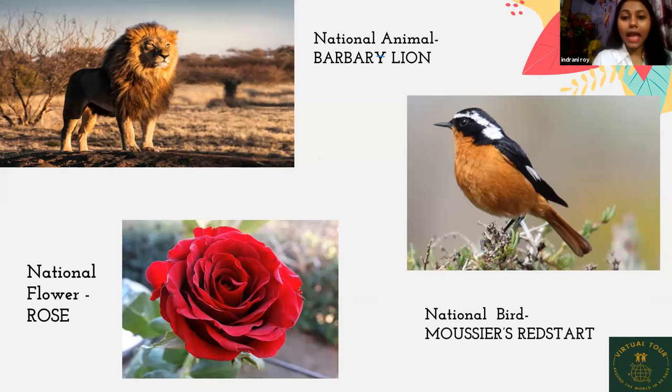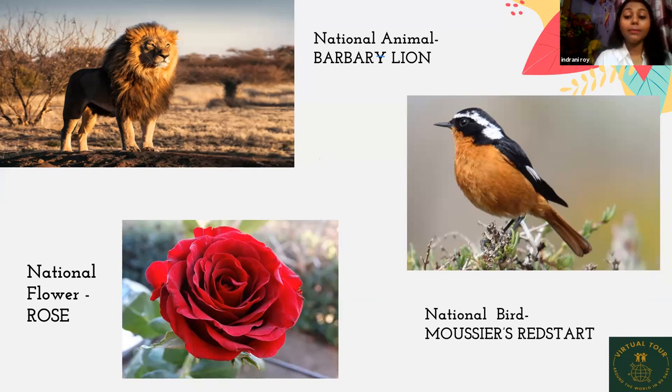The national animal is the barbary lion, the national flower is the rose, and the national bird is the Moussier's redstart.